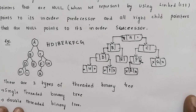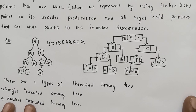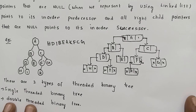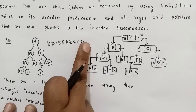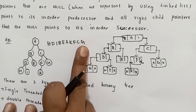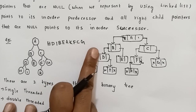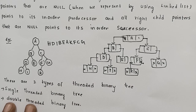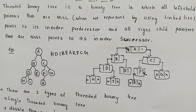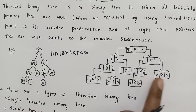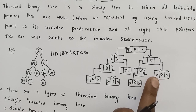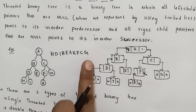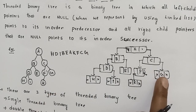If you want to change the null pointers, you will thread them towards successor or predecessor nodes. This is the threaded binary tree concept. In the left child address pointer, we store the in-order predecessor, and in the right child address pointer, we store the in-order successor.